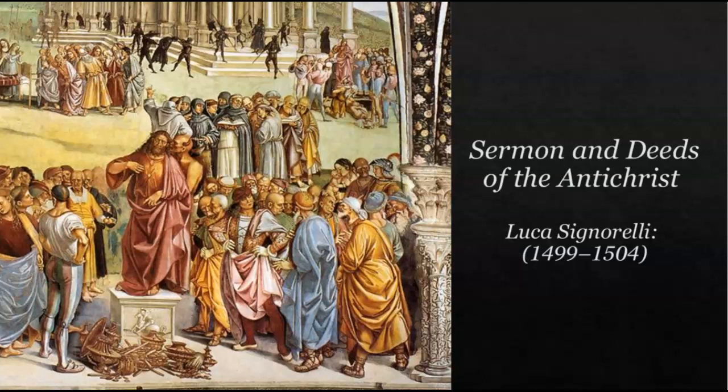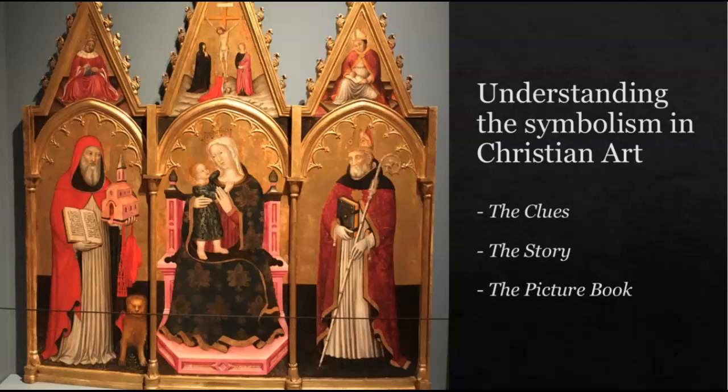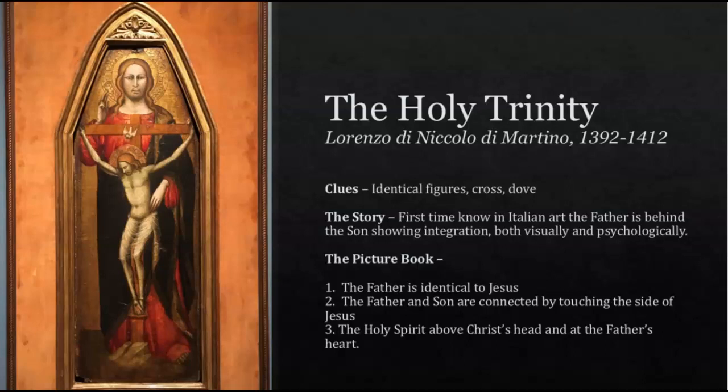Let's start looking at actual religious artwork. Understanding the symbolism of Christian art involves three things: clues, the story, and the overall picture. Every image has clues in it, there's a story behind it, and the question is whether you can determine the story or already know it. Do those clues help you understand the story, or do they ratify what you already know? The first picture came from the gallery at the Museum of the Bible, from an exhibit that ran through September 2020. They show these pictures with descriptions that helped me understand how to interpret the symbolism and what the artist is trying to say.